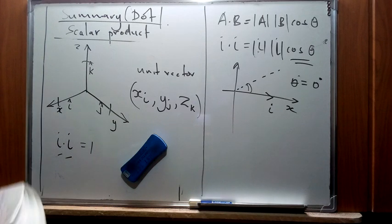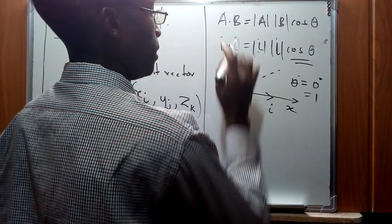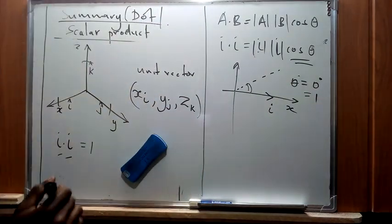...we're going to see that the cosine of zero equals one. So this being a unity vector, so therefore the concept of unity implies that the i direction is just one.